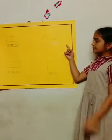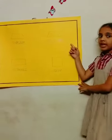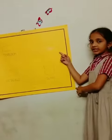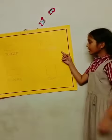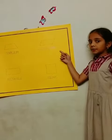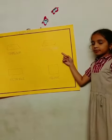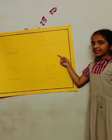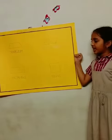Second one is parallelogram. A parallelogram is a quadrilateral in which both pairs of opposite sides are parallel and equal.